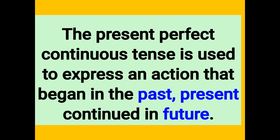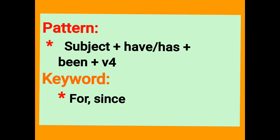We will see how to create sentences using for and since in the present perfect continuous tense. The pattern is: Subject — I, We, You, He, She, It, They — plus Have or Has, plus Been, plus the verb with -ing (V4).